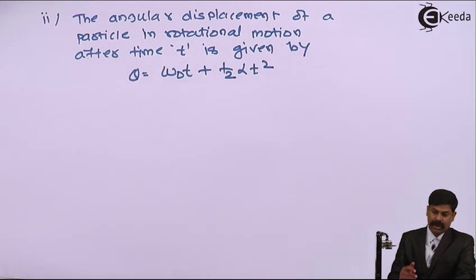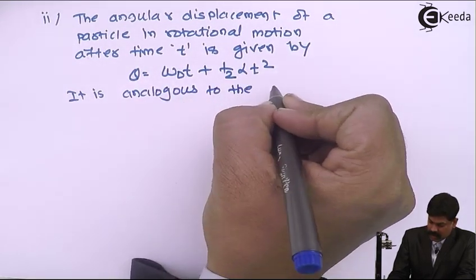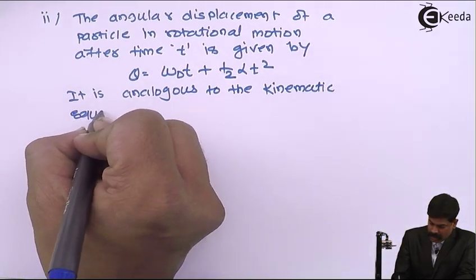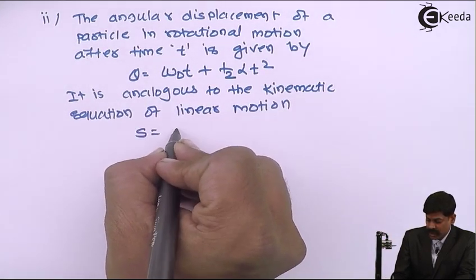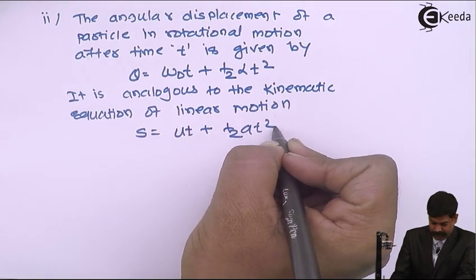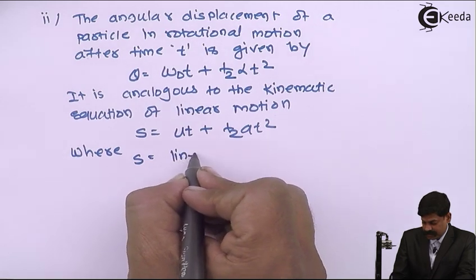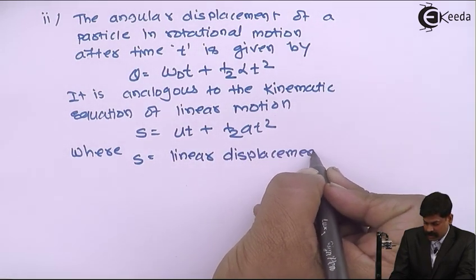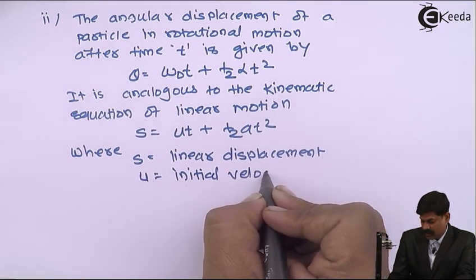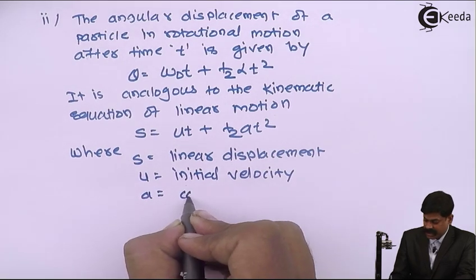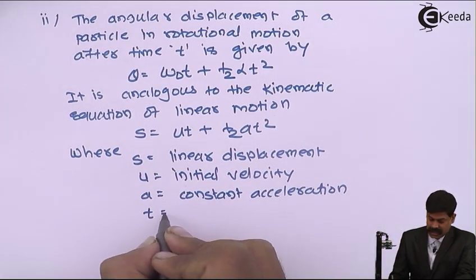This is analogous to the kinematic equation of linear motion, that is s equals to ut plus half at squared, where s is linear displacement, u is initial velocity, a is constant acceleration, and t is time interval.